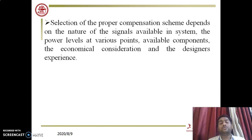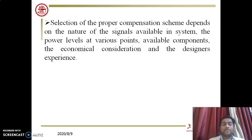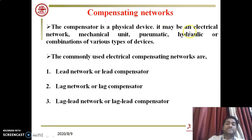The selection factors include signal availability, power level, and available components. Economically, series compensator circuits are more complicated and costly, while parallel compensation is simpler and less costly. Regarding compensation network types, the main types are: lead network or lead compensator, lag network or lag compensator, and lead-lag or lag-lead compensator. These three main compensator types will be discussed in the next lecture.